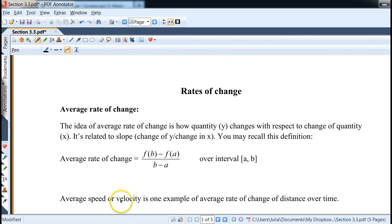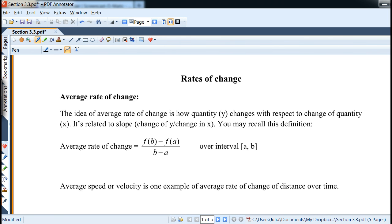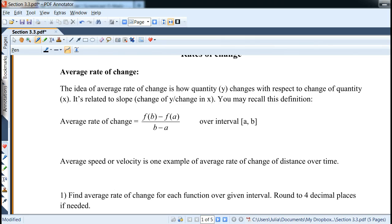So average speed or velocity is one example of average rate of change of distance over time that we'll see quite a bit. And we'll actually start with the average rate of change right away, or the computation of it.